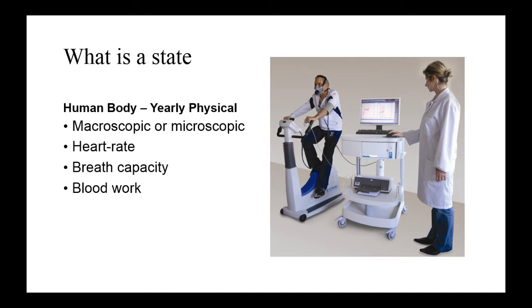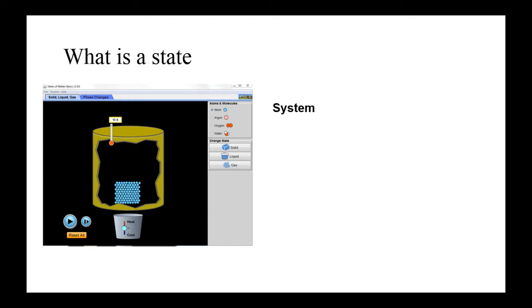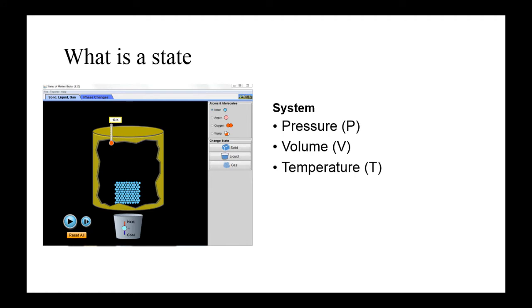We need to define what a state is. If you ever go in for a yearly physical, usually the doctors will take some macroscopic measurements and also microscopic measurements. Some of the macroscopic ones are heart rate and breathing capacity. If he puts you on an exercise machine, he'll measure a couple of different quantities based on that stress level. He may also look at microscopic properties like blood work — cholesterol, thyroid level, or some other indication. It's the same thing with thermodynamic states: for a thermodynamic system, we can identify different state variables. For example, we can talk about pressure, volume, or temperature. We can also talk about the number of molecules, mass, or the number of atoms.